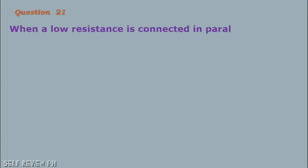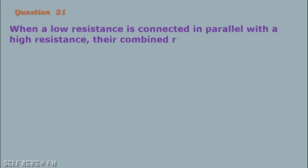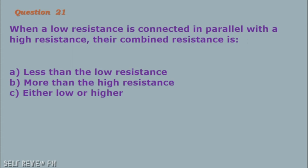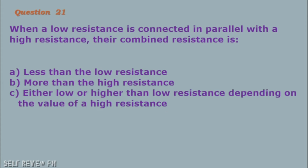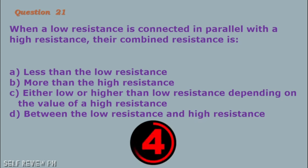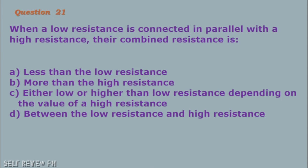Question number 21: When a low resistance is connected in parallel with a high resistance, their combined resistance is: A. Less than the low resistance B. More than the high resistance C. Either low or higher than low resistance, depending on the value of the high resistance D. Between the low resistance and high resistance. The correct answer is letter A, less than the low resistance.